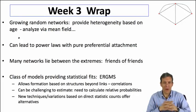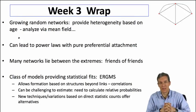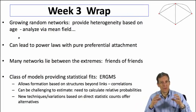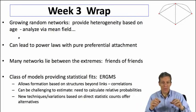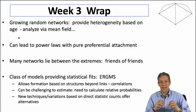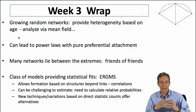The last thing we talked about was another class of models for statistical estimation: exponential random graph models. They're flexible and capture a lot of different things. We saw that they have challenges in estimation — in particular, calculating the relative probabilities is difficult due to the sheer number of networks that can be out there.